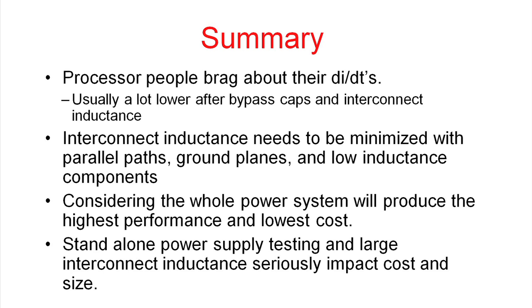In summary, processor power people brag a lot about their high dI/dt. Typically, you'll be thrown requirements of 100 amps per microsecond or even higher, maybe even 1000 amps per microsecond. What you're going to find is that by the time they get to the power supply, they're usually a lot lower. That's because the processor people are going to put many bypass capacitors around their load, and there's going to be some interconnect inductance between these bypass capacitors and the power supply.